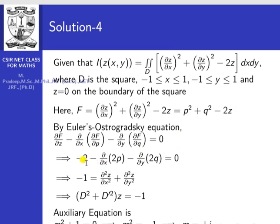Dividing by 2: −1 − ∂/∂x(∂z/∂x) − ∂/∂y(∂z/∂y) = 0, which gives −1 = ∂²z/∂x² + ∂²z/∂y². Bringing the last two terms to the right-hand side, we get the partial differential equation ∂²z/∂x² + ∂²z/∂y² = −1, which is of the form (D² + D'²)z = −1.